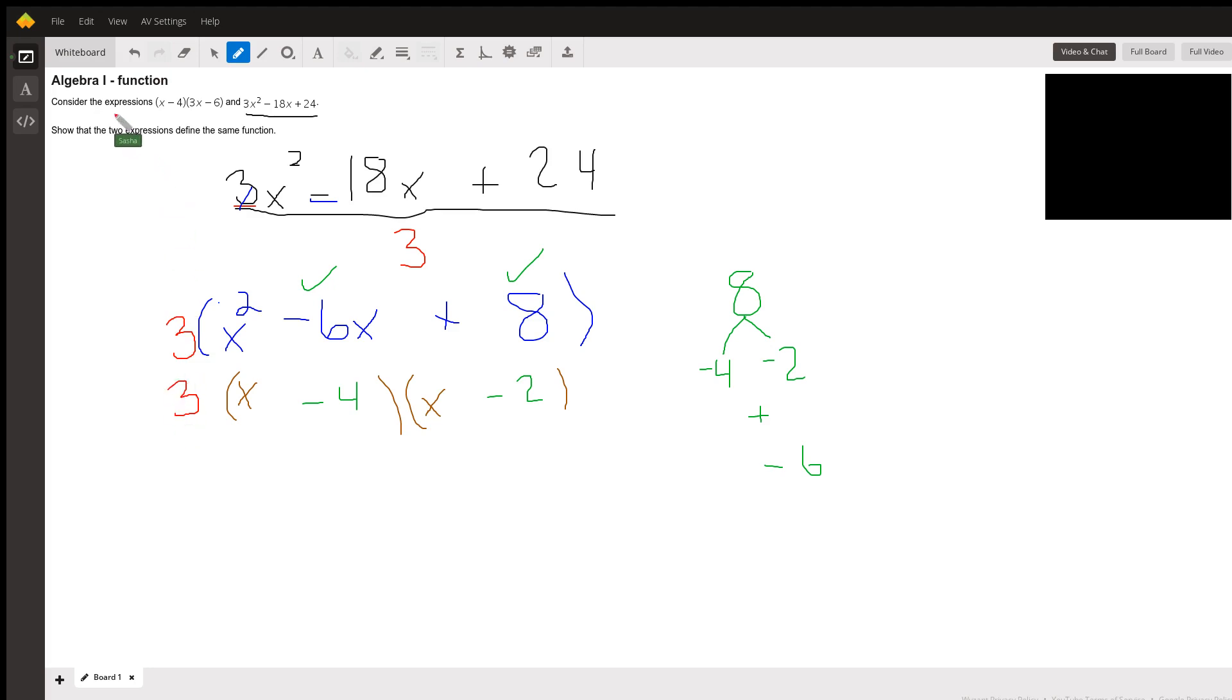Now, your question says, consider the expressions. Expression just means you have polynomials or you have a bunch of terms put together and there's no equal sign. So consider the expression, show that the two expressions define the same function. So right now we have x minus 4 and 3x. You see this 3x minus 6? So I have my x minus 4, and I'm just going to remove that. There's my x minus 4. Let's get that out of there because that matches this one.